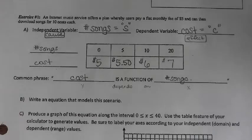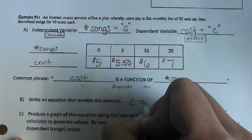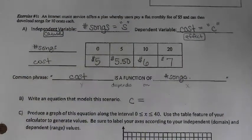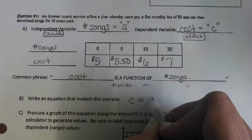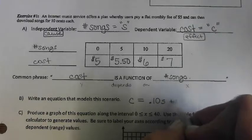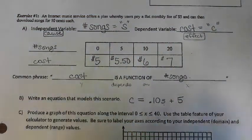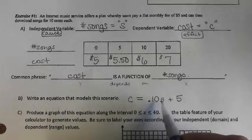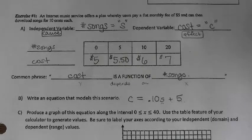Part B asks us to write an equation that models this scenario. We're going to let cost be C. So your cost equals, and how do we calculate our overall cost? Perfect. It's 10 cents times however many songs you have, plus the additional $5 monthly fee.